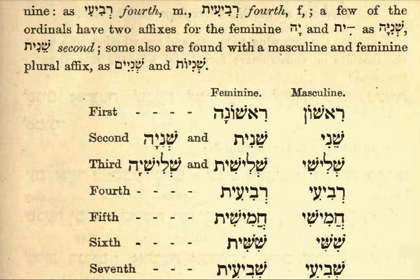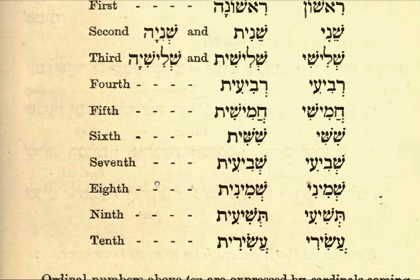Fifth: feminine Khamishit, masculine Khamishi. Sixth: feminine Shishit, masculine Shishi. Seventh: feminine Shvi'it, masculine Shvi'i.